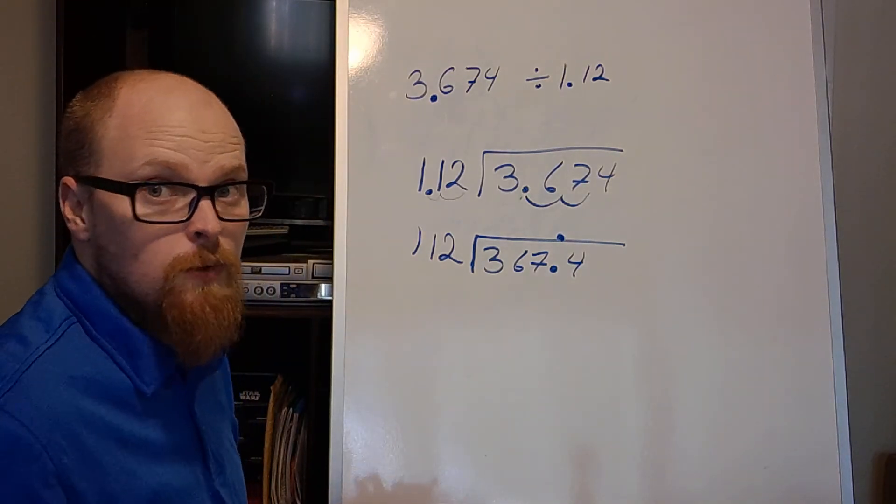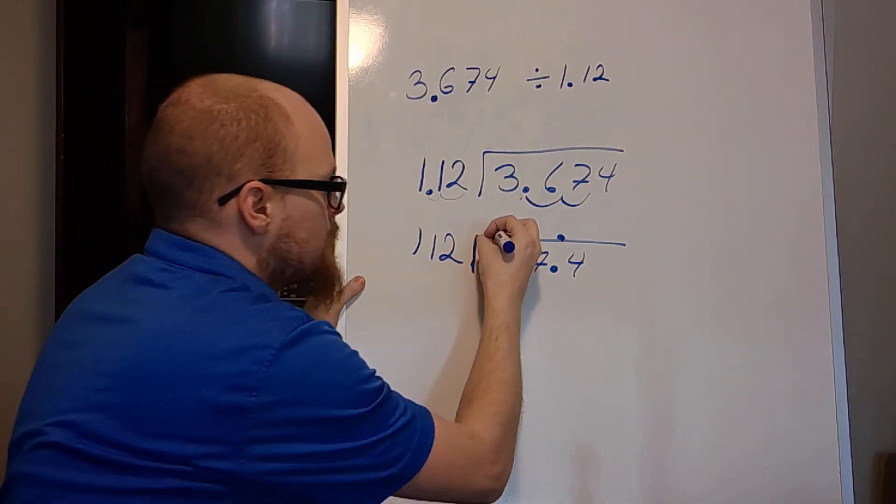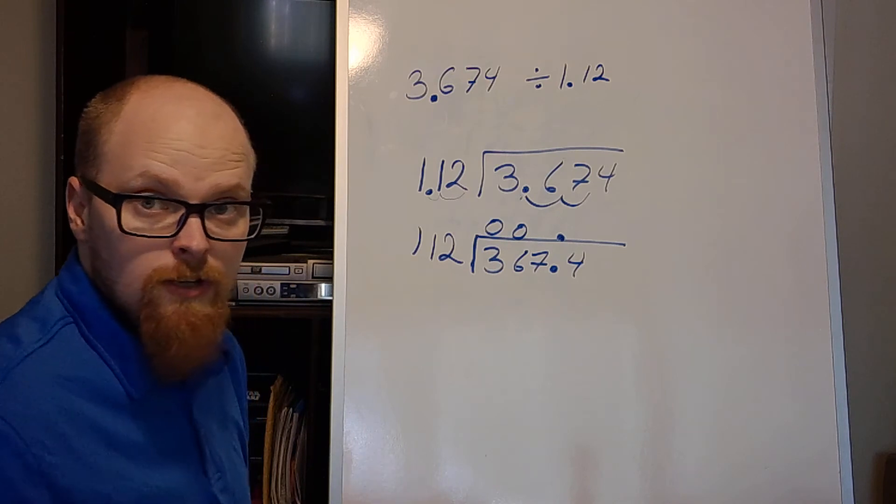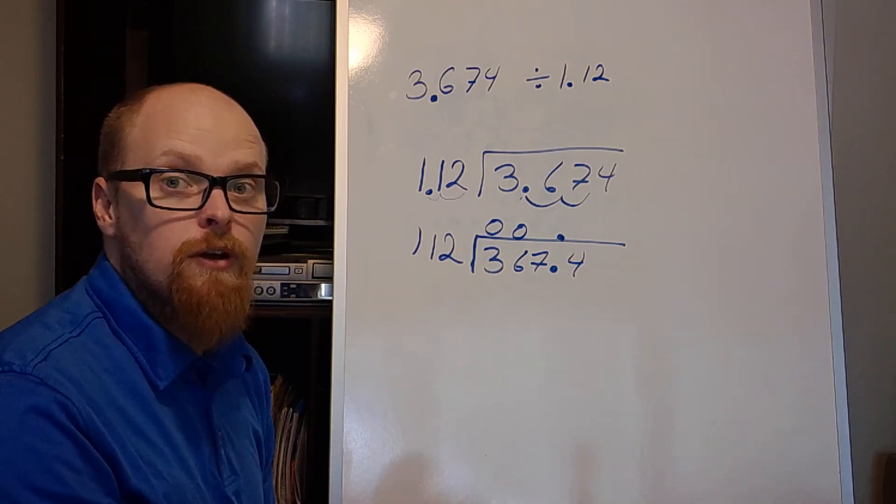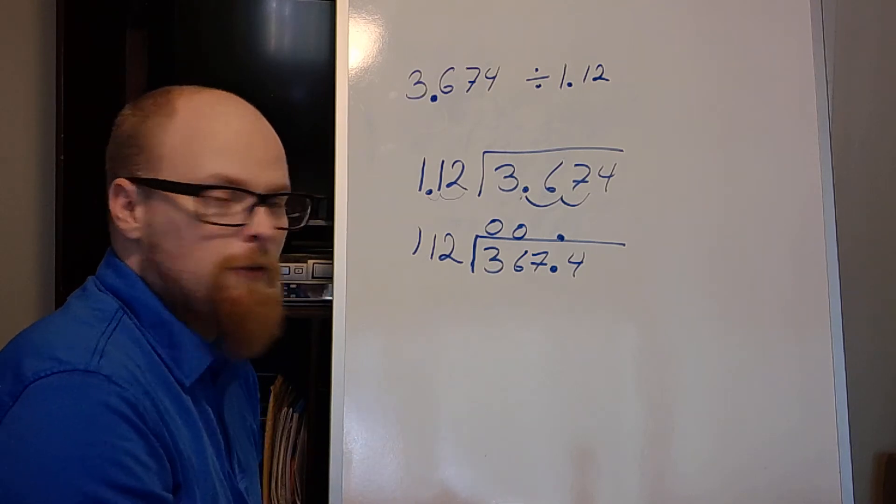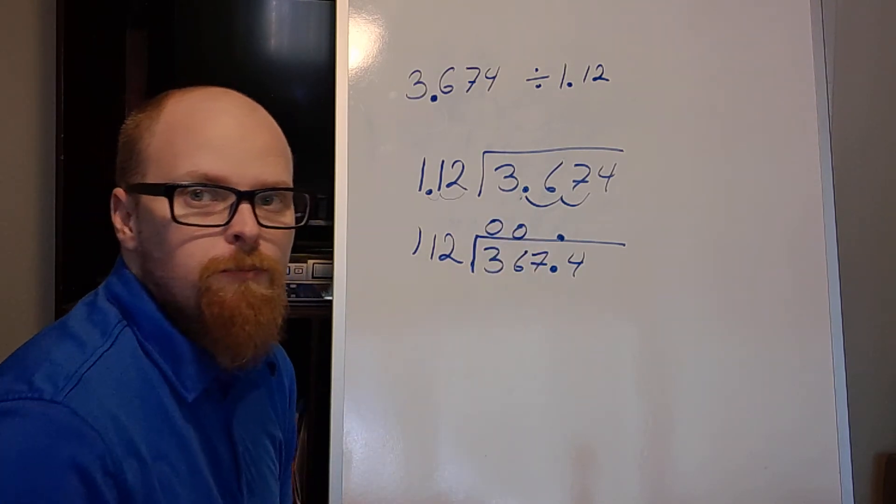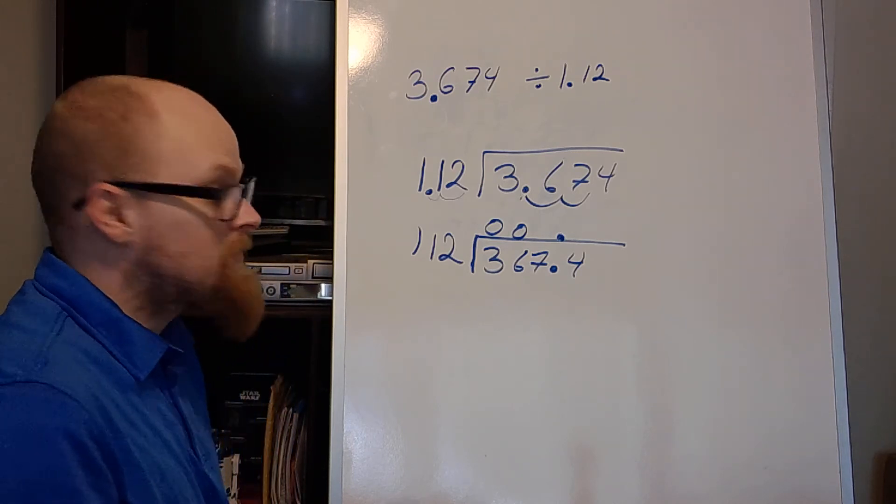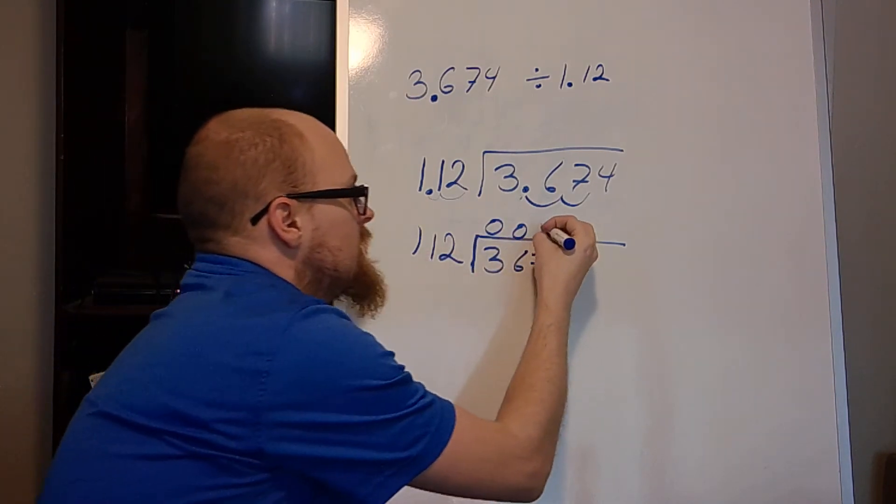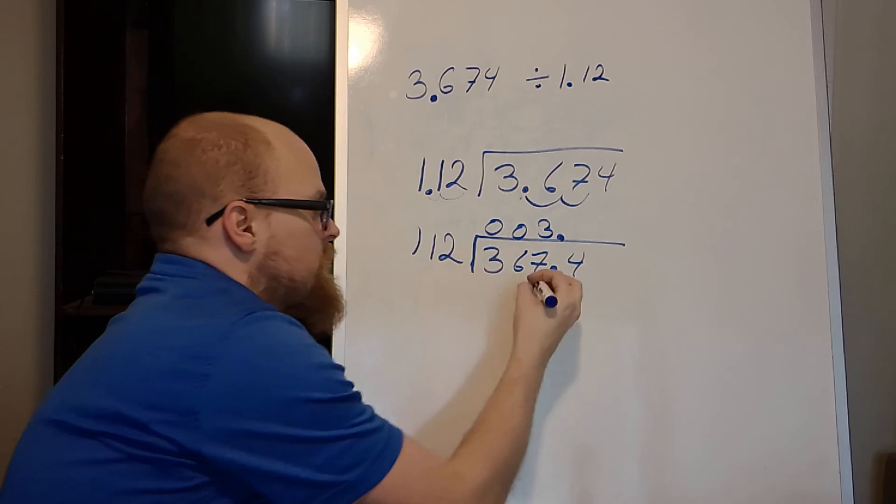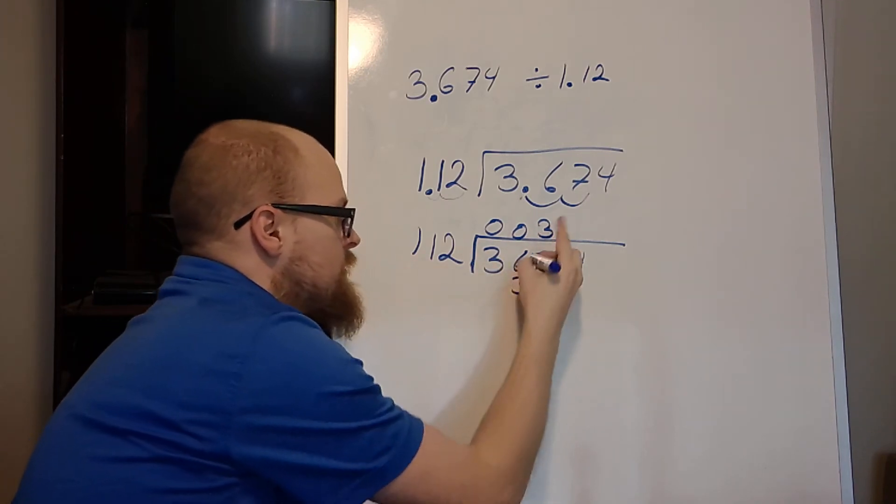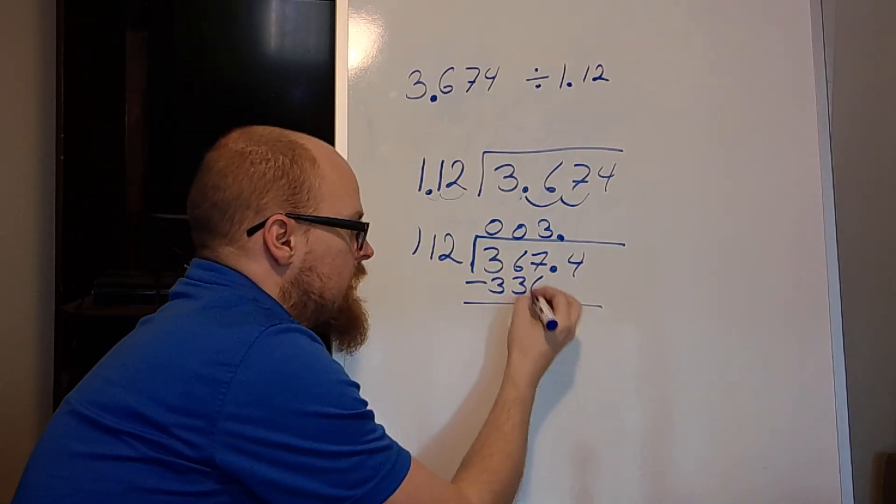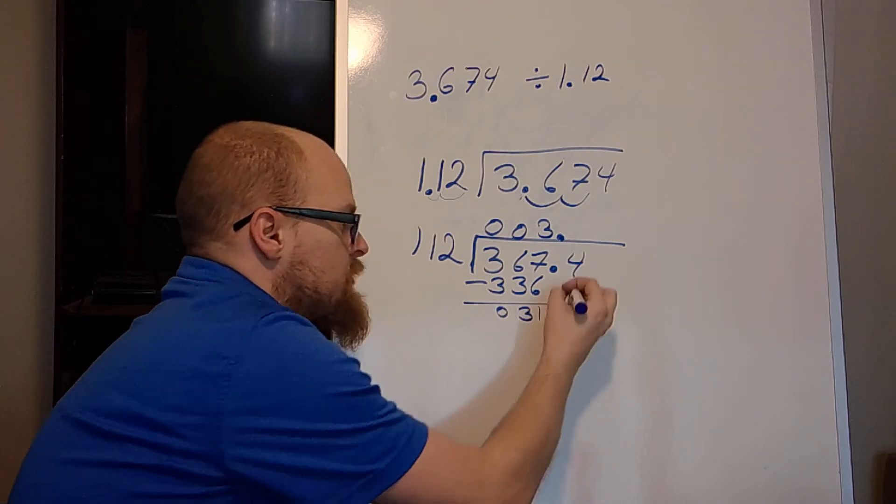And then I divide like normal. 112 will go into 3 zero times. It will go into 36 zero times. My brain likes those zeros. Because otherwise, I will start writing my numbers way out here and it will give me a wrong number. So 112 will go into 367. I know at least three times because my number up front is three. So I can multiply this out. Three times two is six. Three times one is three. Three times one is three. I subtract just like usual. I've got one there, three there, and a zero there. I bring my four down.